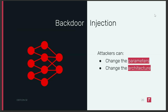To backdoor a pre-existing model, the attacker should be able to change the parameters or the architecture. How this actually plays out can vary a lot. For example, sometimes the attacker has control over some element of the training process and uses that to sneak in manipulated data that changes the model's parameters — that's usually called data poisoning. Or they might go a step further and fiddle with the model's source code to change the architecture.